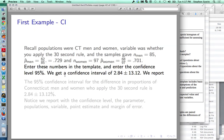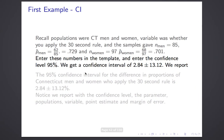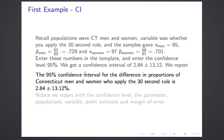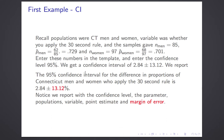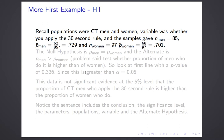Here's how you report it: 'The 95% confidence interval for the difference in proportions of Connecticut men and women who apply the 30-second rule is 2.84 plus or minus 13.12%.' Notice this contains the confidence level (95%), the parameter (difference in proportions), the populations (Connecticut men and women), the variable (whether they apply the rule), and the confidence interval expressed as a point estimate plus a margin of error.